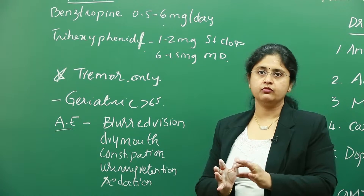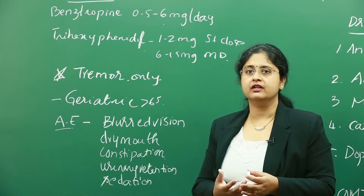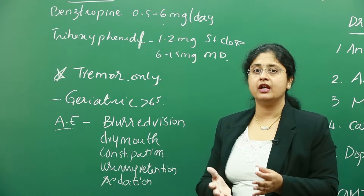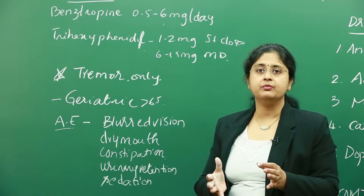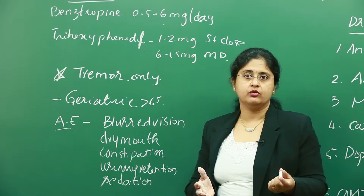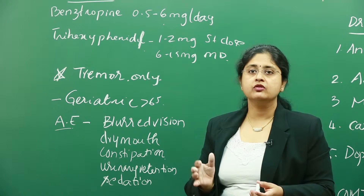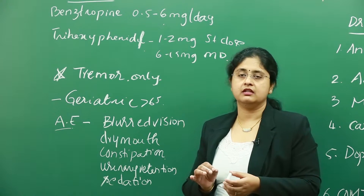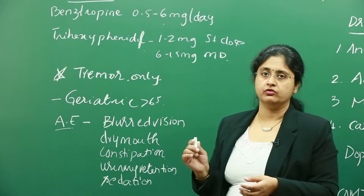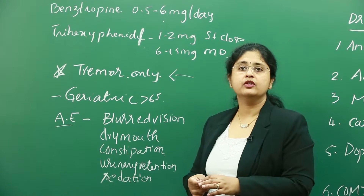When we look at why we use anticholinergics, we know from Parkinson's disease that there is a decrease in dopamine — dopaminergic neurons are being affected. That is the reason we see all the symptoms. But we also have to remember that there is an imbalance between dopamine and acetylcholine: dopamine concentration goes down and acetylcholine concentration goes up. Because of this increased acetylcholine, anticholinergics are used.